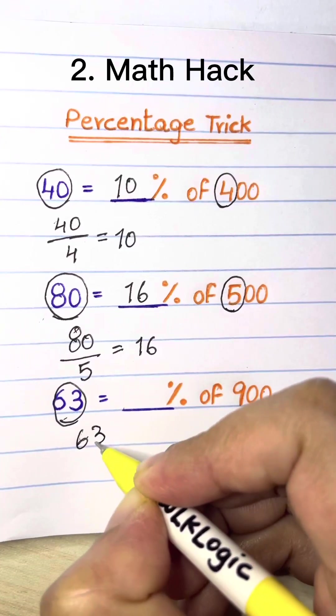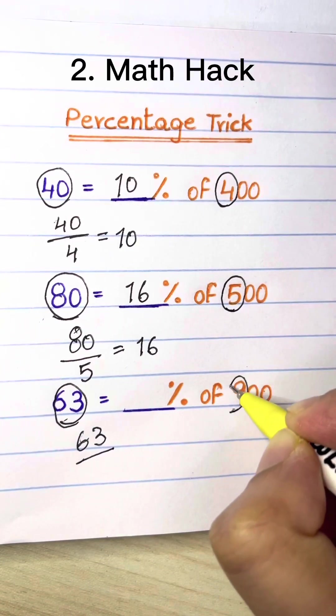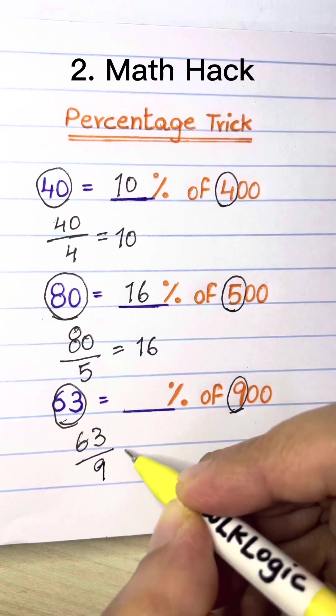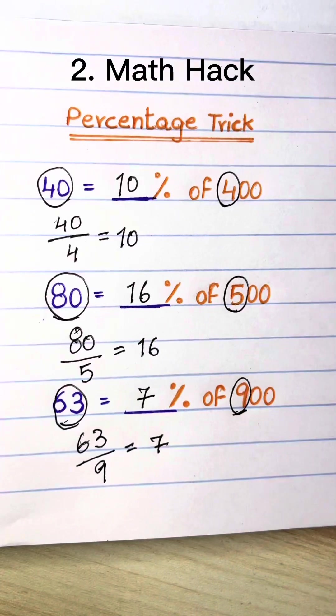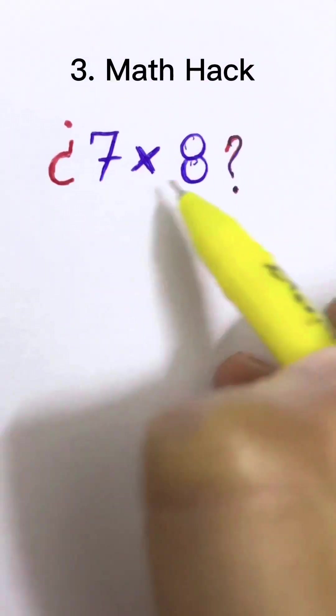63 is what percent of 900? Just take 63 divided by 9. That gives you 7. So 63 is 7% of 900. How much is 7 times 8?